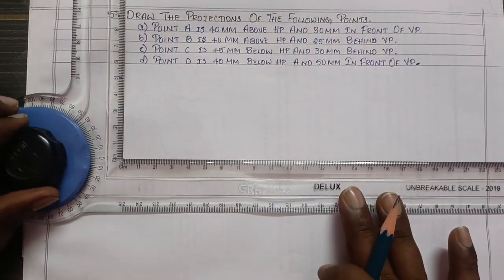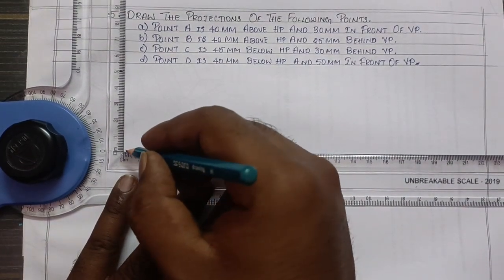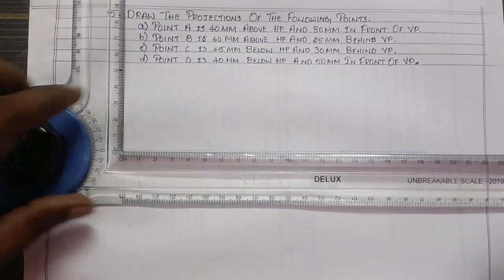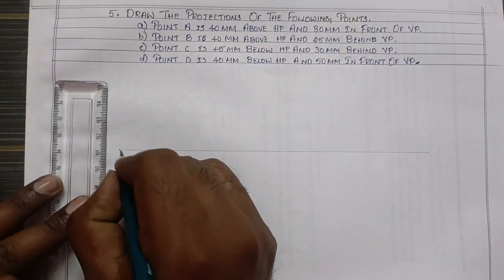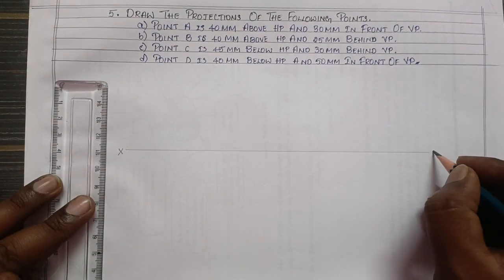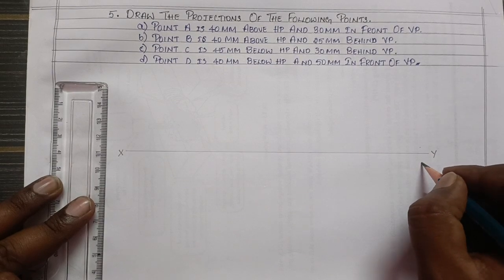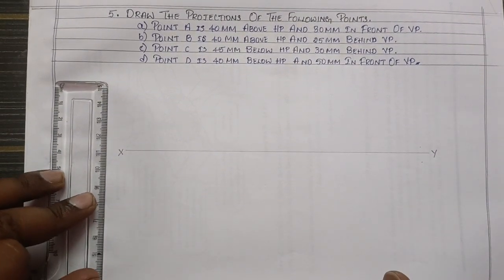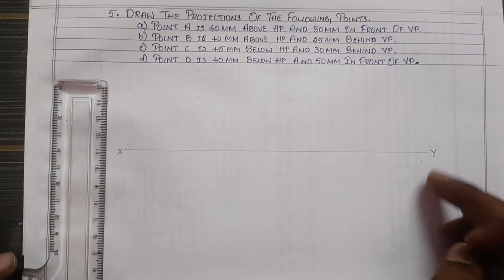First, draw the XY line. We are using the 1st coordinate method. You must mention X and Y. This is the VP plane and this is the HP plane. In this drawing, we use the first angle projection.